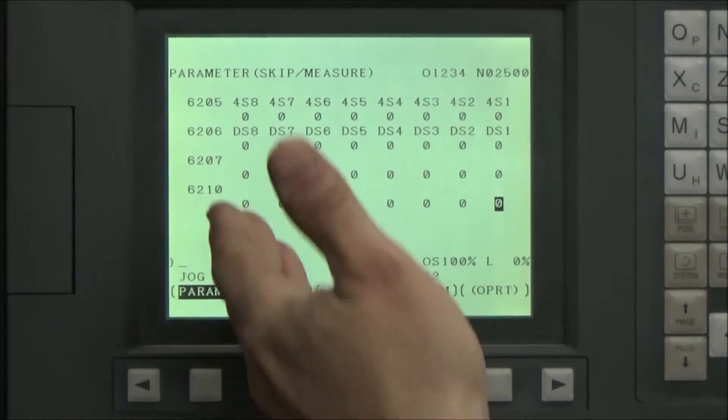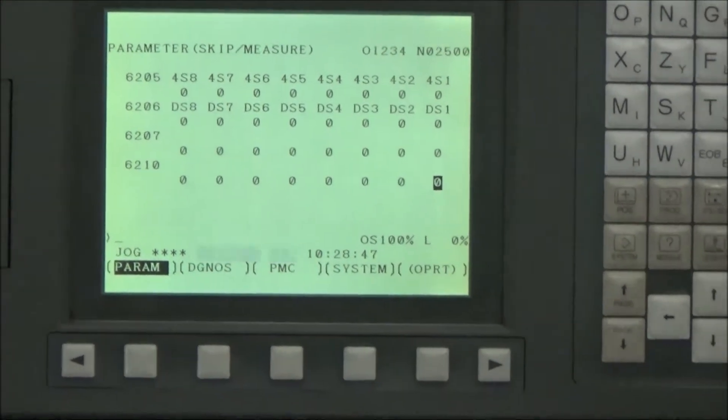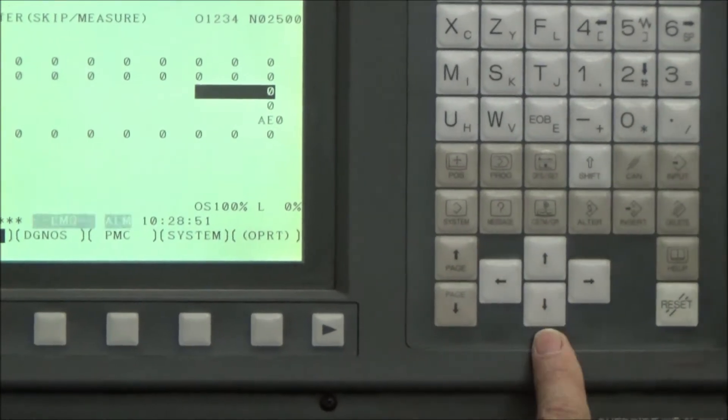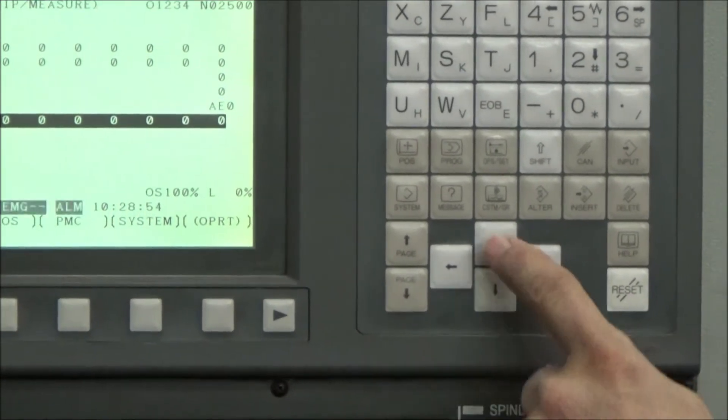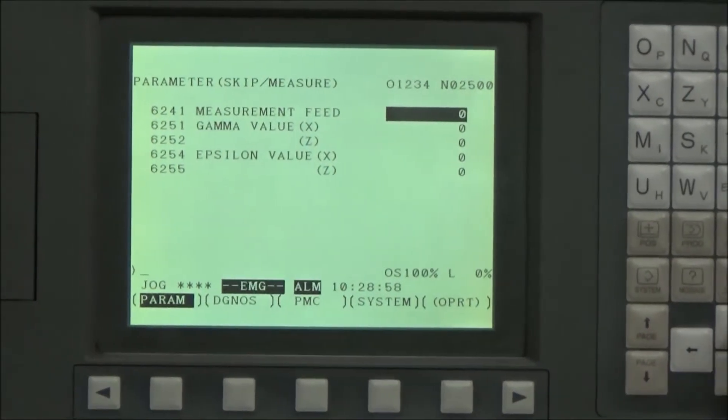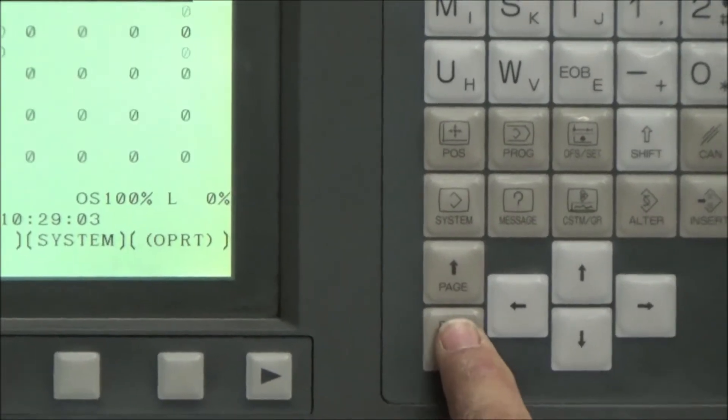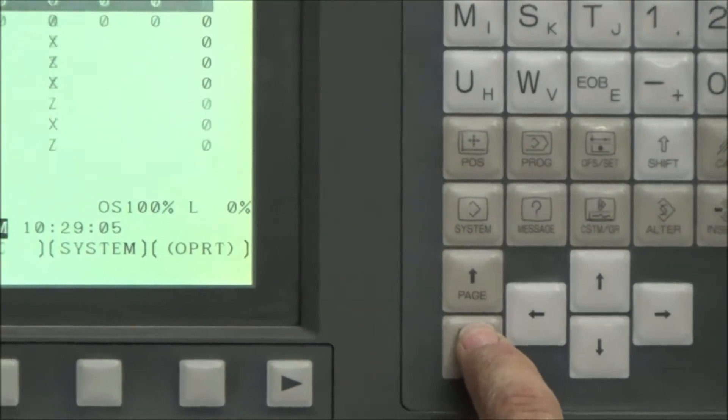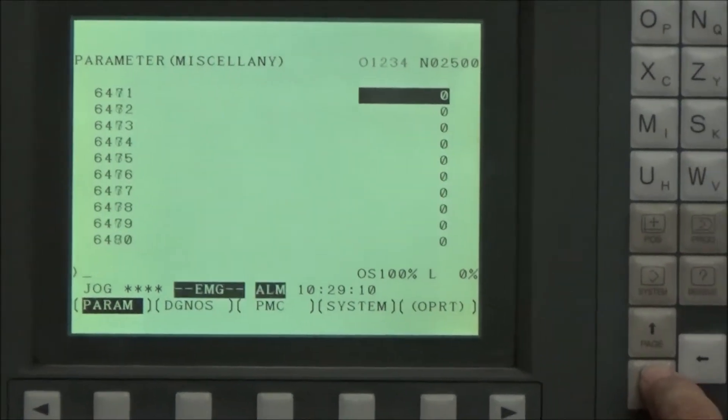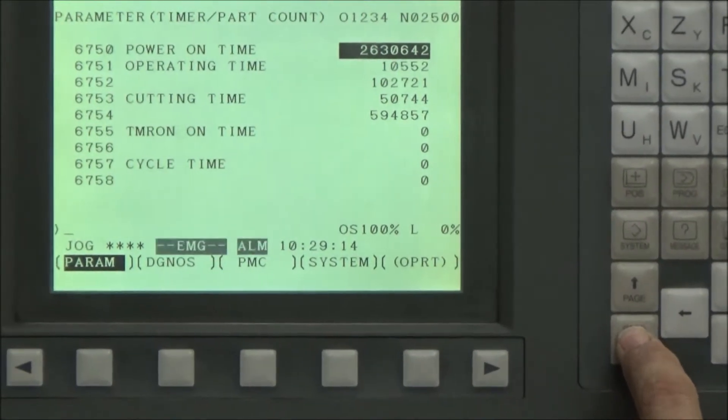And I'm at parameter 6200. I want to get there as fast as I can. I could one line at a time move down, parameter at a time with the down arrow. Up and down arrows, one parameter at a time. But I want to get faster. So I'm going to go a page at a time. Next to the up and down is page up, page down. So I'm going to go page down and hit it until, you see the numbers keep climbing, 6400, 6410, and I'll keep hitting faster and faster until I get there. 6750.